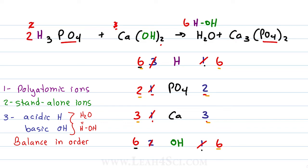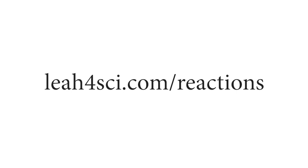We have 2 phosphoric acid reacting with 3 calcium hydroxide to give us 6 water plus 1 calcium phosphate. Once you're comfortable with this, I challenge you to redo this problem using the method of writing out every single atom, then come back and let me know in the comments if the shortcut saved you any time. Be sure to join me in the next video where we look at how to balance redox equations. Visit leah4sci.com/reactions for the MCAT stoichiometry and reactions practice quiz and cheat sheet.